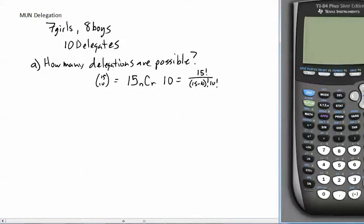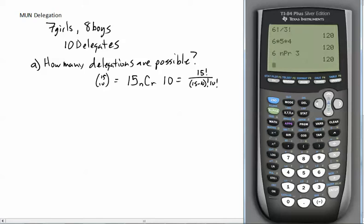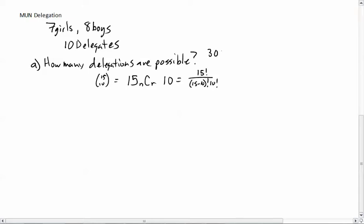So if we go to our calculator, as I'm doing this, we are going to go 15, we'll go into our math, we'll go over to probability, and we will do NCR 10. And you will notice that we end up with 3,003 possible delegations. So we've got 3,003 possible delegations, possible combinations of students using just these 15 little boys and girls.